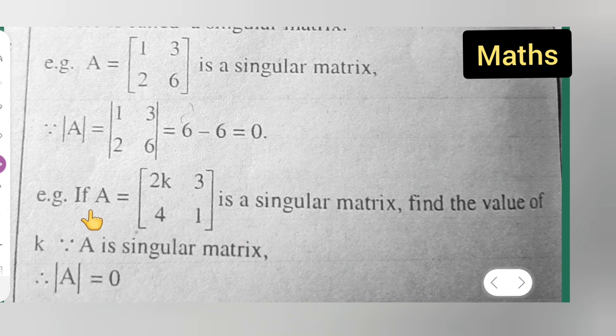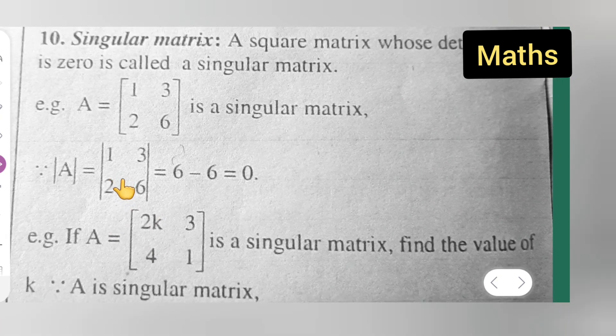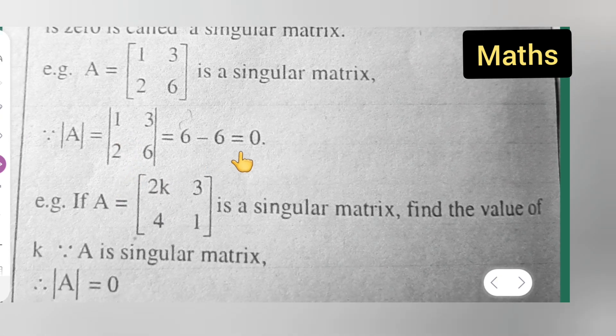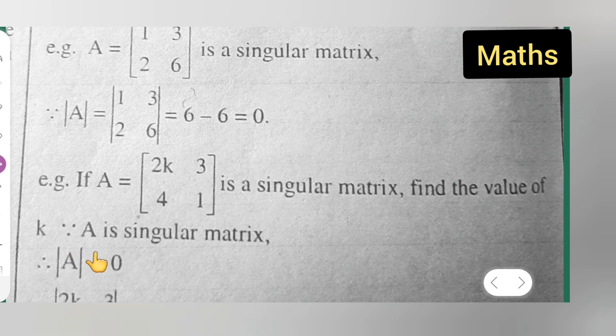If A = [2k, 3; 4, 1] is a singular matrix, find the value of k. Here we have to find out the value of this k. Since A is a singular matrix, determinant of A is 0. What was the condition? We are getting 0, right? So determinant of A is 0.